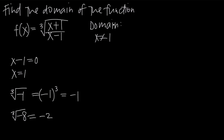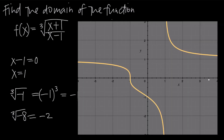So if we translate the domain into continuity, we can say that the function f of x is continuous everywhere except at x equals 1, because the function is always continuous wherever it's defined. We can confirm this by graphing the function. Looking at the graph of f of x, we can see a continuous function everywhere except at x equals 1, where there is a vertical asymptote. Therefore, there's a discontinuity at x equals 1, but the function is continuous everywhere else.